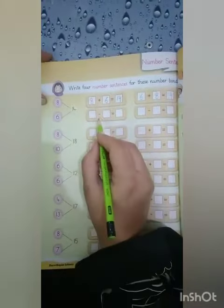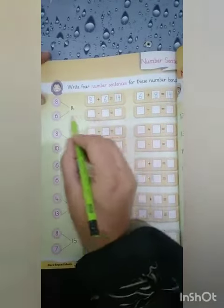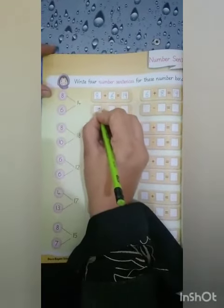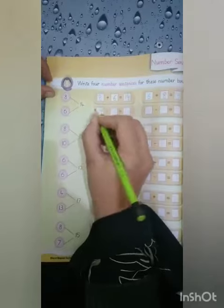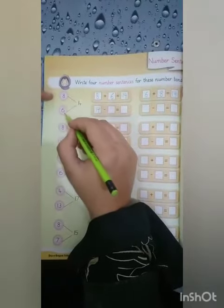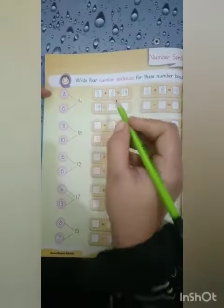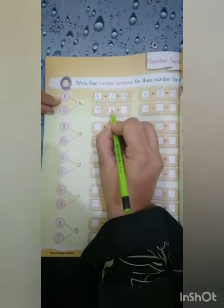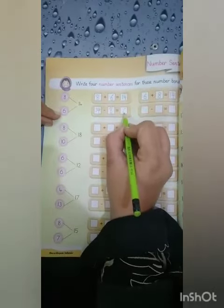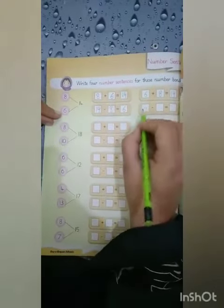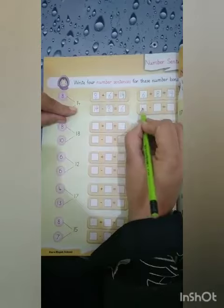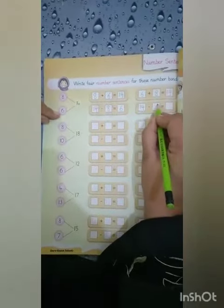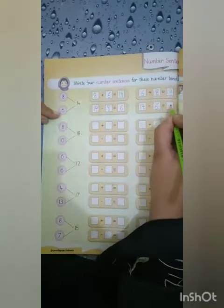Now we subtract. Ab hum isko less kareenge. Kisse? Biggest number se — 14. This is the whole number. Whole number se one by one hum isse subtract kareenge. First: 14 minus 8 equals 6. Now again, whole number: 14 minus 6, the answer is 8.